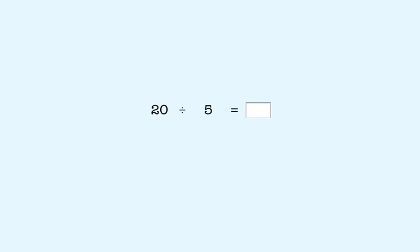To find the answer to this problem, we ask the question: What number do we multiply by 5 to get 20? You know that the answer to that question is 4. So when we divide 20 by 5, the answer is 4.